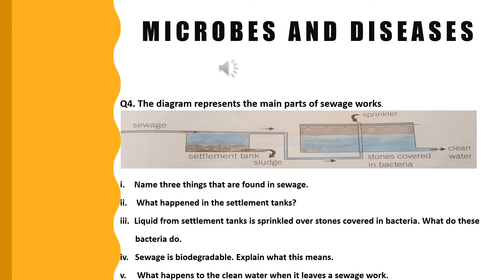The diagram represents the main parts of sewage works. The first question is: Name three things that are found in sewage. There are many things present in sewage; you can write them yourself. Examples would be microorganisms, feces, and industrial wastes.